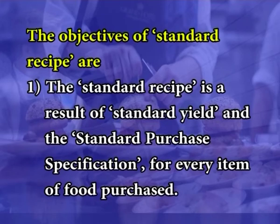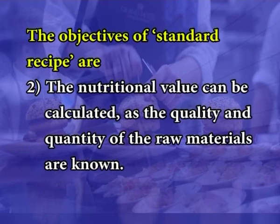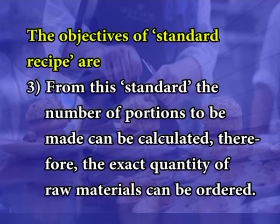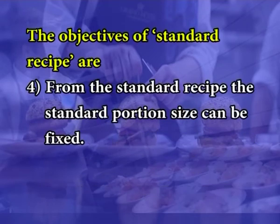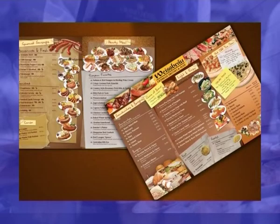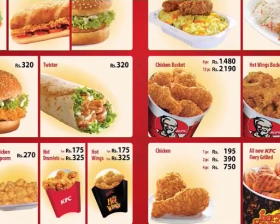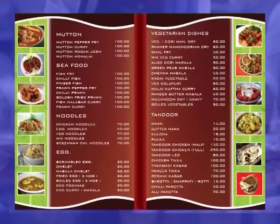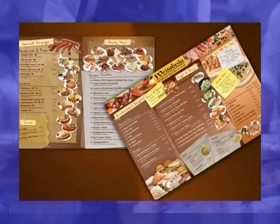The most important marketing aspect is that customers are served an item of identical quality every time it is ordered. The objectives of standard recipe are: it is a result of standard yield and the standard purchase specification for every item purchased; the nutritional value can be calculated as the quality and quantity of raw materials are known; the number of portions to be made can be calculated, and therefore the exact quantity of raw materials can be ordered. From the standard recipe, the standard portion size can be fixed, and the food cost can be calculated. The standard recipes for all items in the menu are documented and include photographs of the finished products, serving as a guide for kitchen staff and for illustrating on the menu cards.